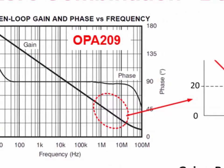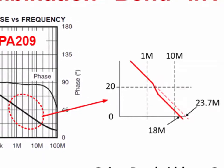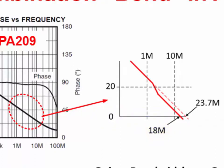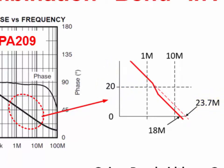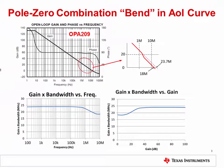These two curves depict how the gain bandwidth product changes with frequency and closed loop gain. Notice that at a closed loop gain of 0 dB, or 1 volt per volt, the gain bandwidth product is 18 megahertz, as stated in the data sheet. As the closed loop gain increases, the bandwidth increases to 23.7 megahertz. Ultimately, there are three lessons to learn. First, it is not unusual to see some deviation in gain bandwidth for different closed loop gains. Second, the phase curve is key to locating the existence of a pole zero pair, so always inspect the phase curve in addition to the open loop gain curve. Finally, don't expect the exact bandwidth performance listed in the data sheet — typical bandwidth specifications can vary by approximately plus or minus 30% over process, and an additional plus or minus 30% over temperature.